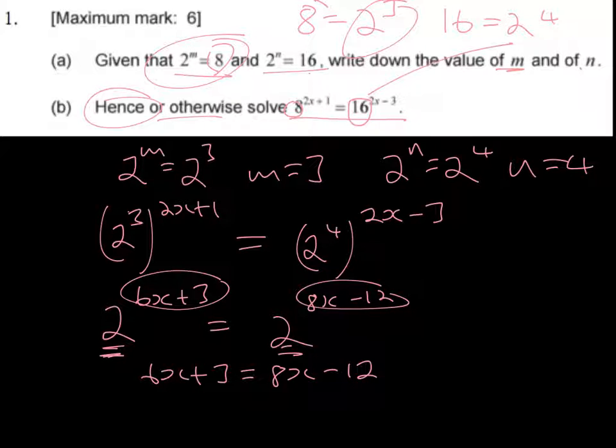Therefore, we can rearrange that to get 2x is equal to 15, so therefore x must be equal to 7.5.